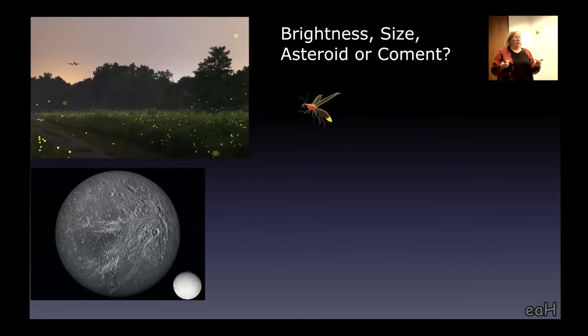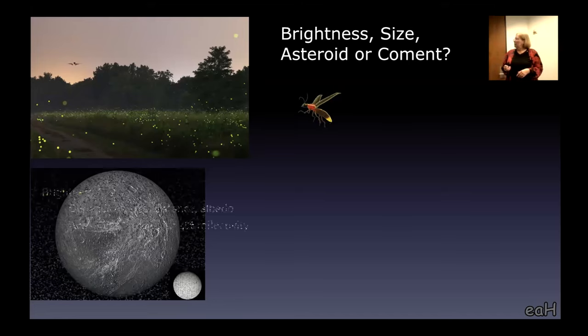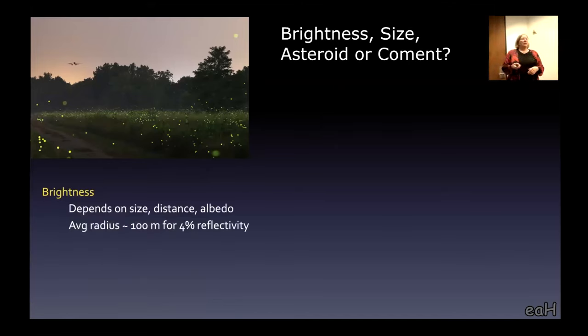We can't tell if it's dark and big or bright and small. However, comets are particularly dark. So we made an assumption. Comets actually reflect only about four percent of the light. Assuming that it's really dark, it turns out that it was only about 100 meters in radius.